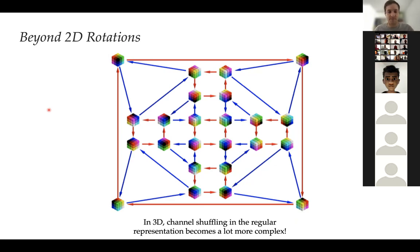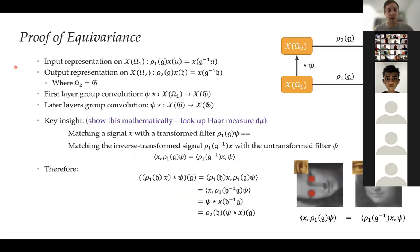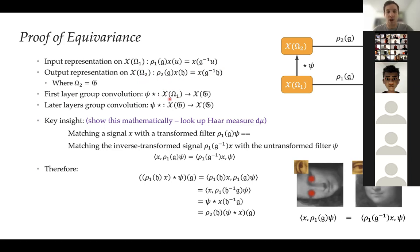We've defined group convolution and claimed it's equivariant. We've seen it visually in one example — but how do we prove it mathematically? The setup: input representation ρ₁ with domain Ω₁ that the group G acts on, and output representation ρ₂ which is the regular representation on the group. In the first layer, input is a signal on Ω₁ and output is a signal on the group; in later layers both are on the group.